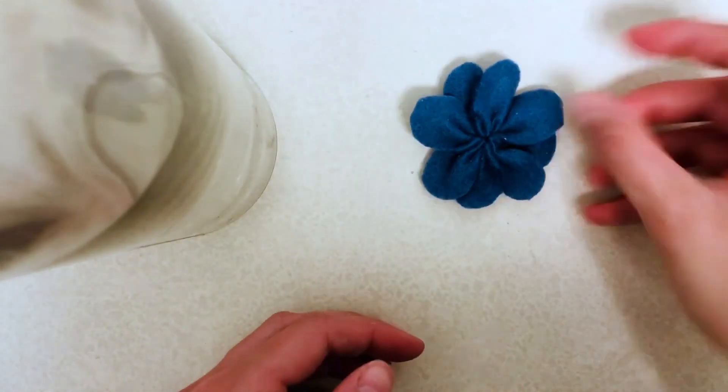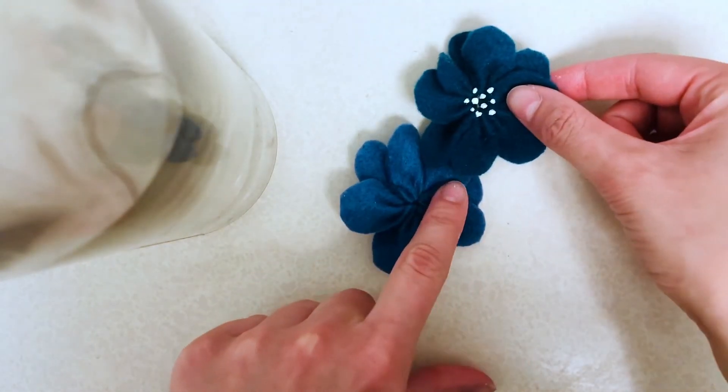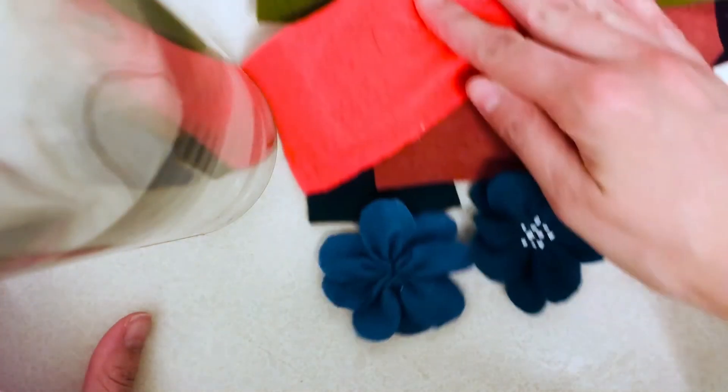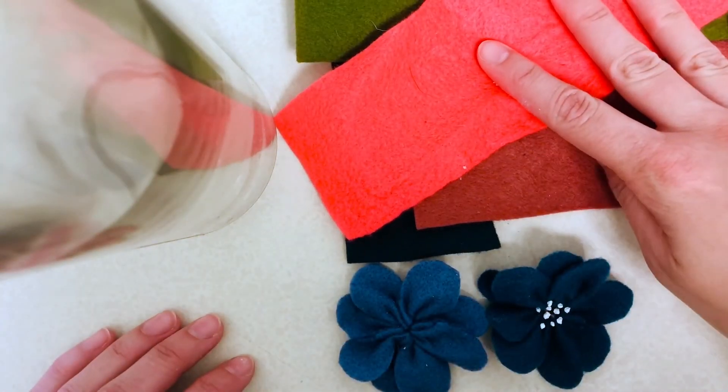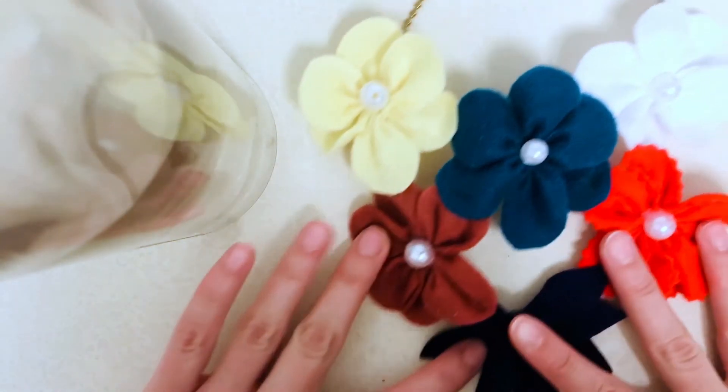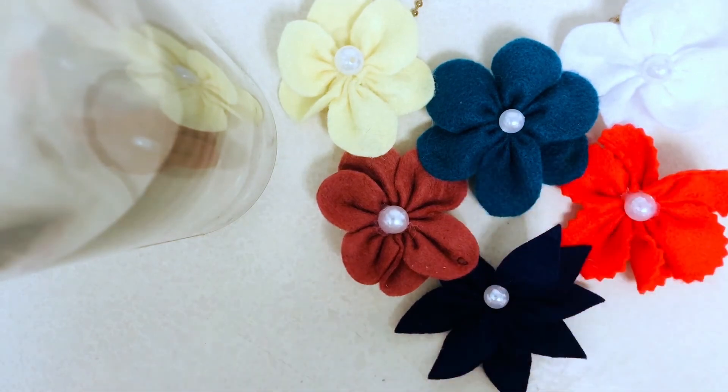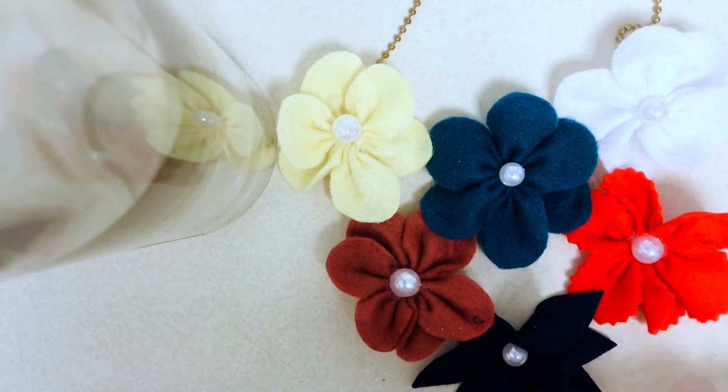This is a really great project for a range of age groups because you can really make it as easy or as detailed as you'd like. You can add pipe cleaners to make them stems or sew them to headbands or hair ties. If you have beads available you can actually sew them in for additional details. For another project I actually wove and sewed some additional chain to the back to make this necklace. There's really a lot of different ways you can make this your own which makes it such a great project.